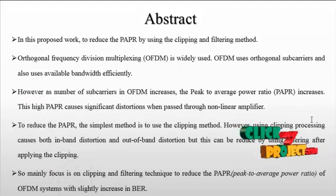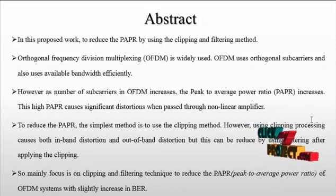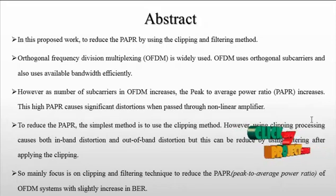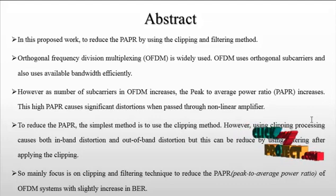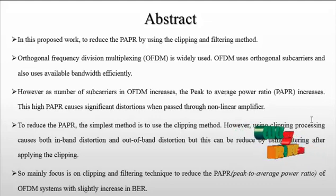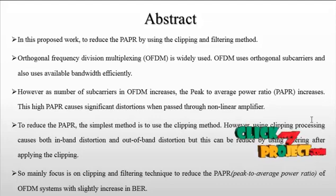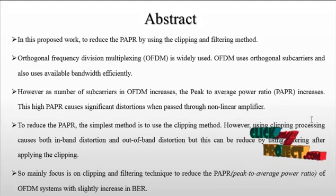In this proposed work, to reduce the PAPR — that is the Peak to Average Power Ratio — we use the clipping and filtering method. OFDM uses orthogonal sub-carriers and is bandwidth-efficient. However, as the number of sub-carriers in OFDM increases, the peak to average power ratio also increases. This high PAPR causes significant distortion when passed through a non-linear amplifier. The simplest method to reduce PAPR is to use the clipping method.